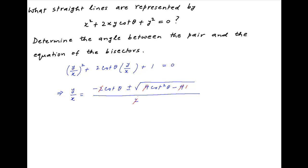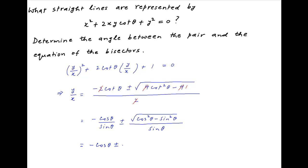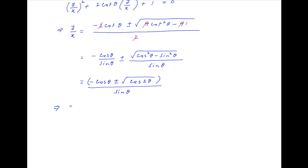The 2 cancels across the numerator and denominator, and this equals −cos θ/sin θ ± √(cos²θ − sin²θ) / sin θ, which equals (−cos θ ± √(cos 2θ)) / sin θ. Cross-multiplying, we get y sin θ = (−cos θ ± √(cos 2θ)) × x.